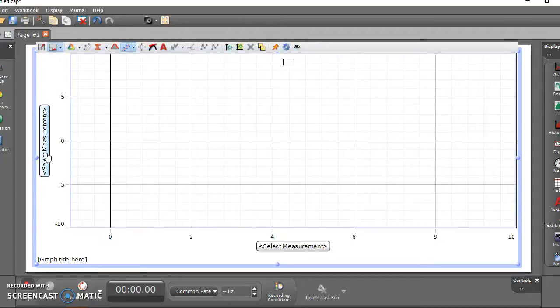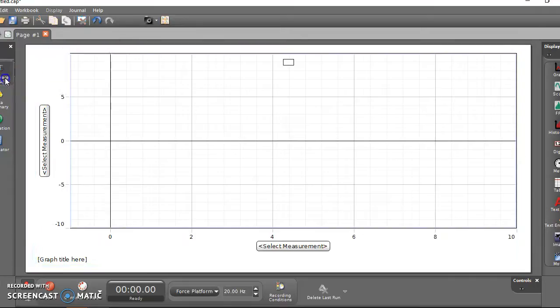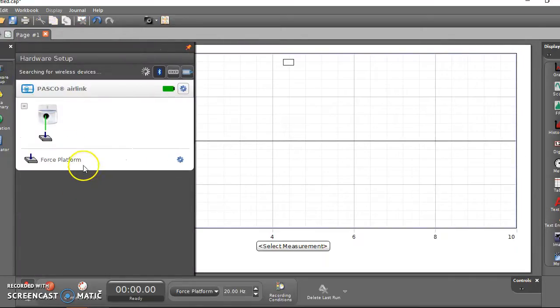From here, when you're ready, you'll plug in the scale, or the force plate as it's called. It's just a fancy scale. You heard the little beep, and then you'll click on hardware setup over here on the side. Choose force platform.